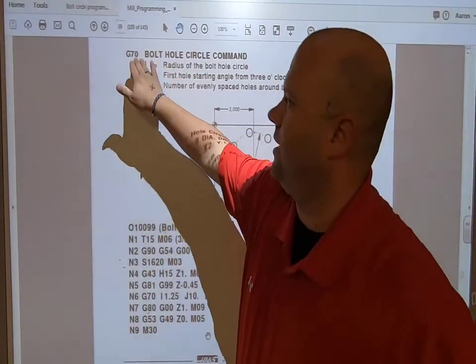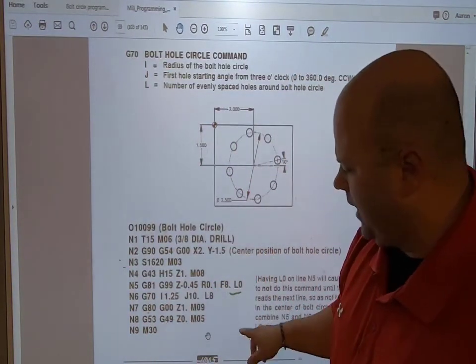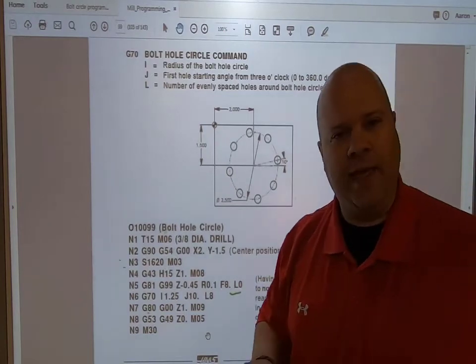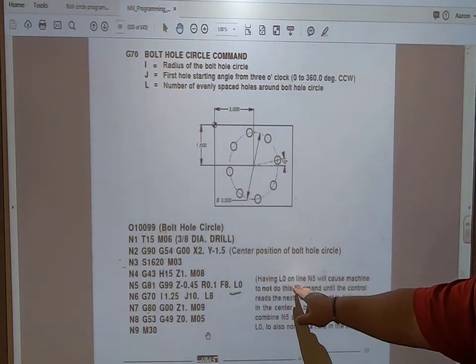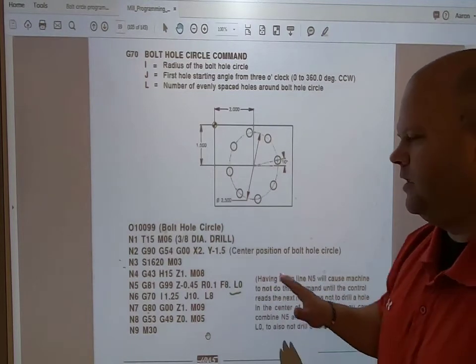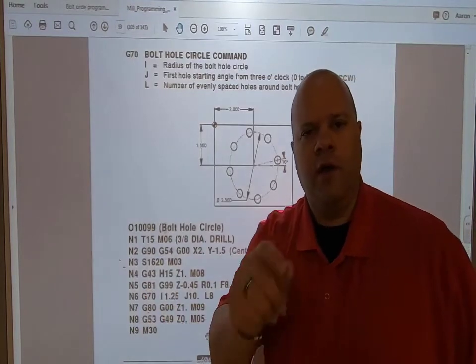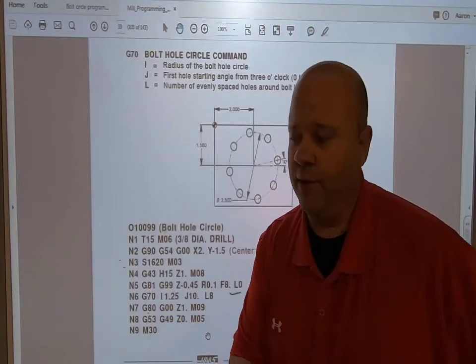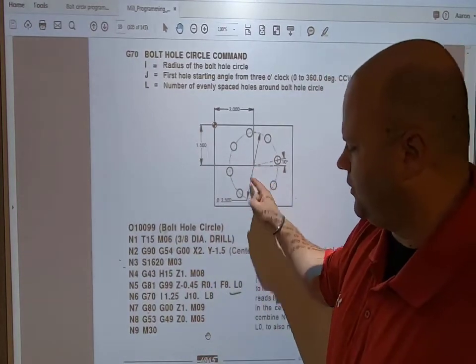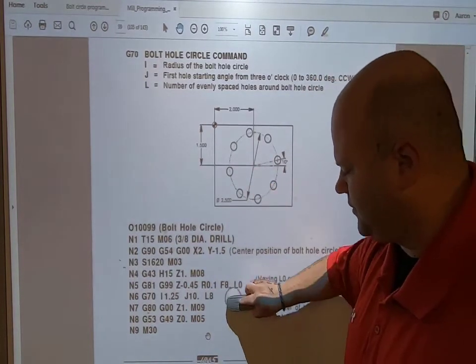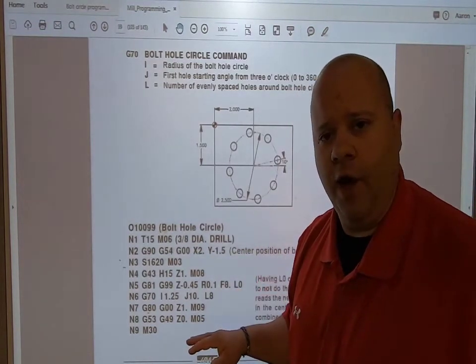If you look over here, having an L zero on the line will cause the machine not to execute the G81 where it is currently at. It will pick up all drill canned cycle information, but it will not drill a hole right there on the center. Very imperative that you have L zero on that line of code.